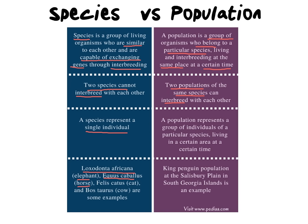Are they the same species? Yes, because they can reproduce with one another and they can produce fertile offspring. But they're two separate populations. A population essentially represents a group of individuals of a particular species living in a certain area at a certain time.